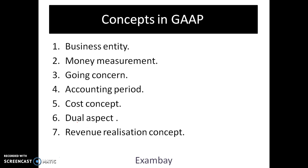Now we have the money measurement concept. Only those transactions which can be quantified in terms of money are allowed to be recorded in accounting books. For example, if I'm an employee and someone gives me a free ride to the office, I cannot record that because I don't have a bill. But if I take a cab and put in the bills, the company will reimburse me and that transaction will appear in the company's books.